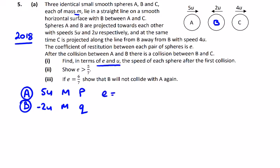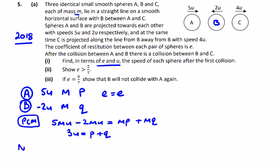The principle of conservation of momentum: 5mu minus 2mu is equal to mp plus mq. 5u minus 2u, which is 3u, is equal to p plus q.